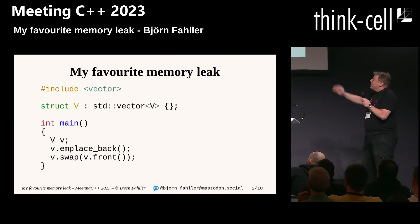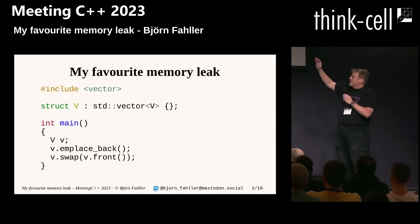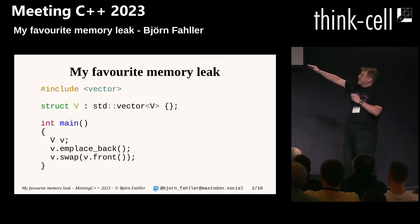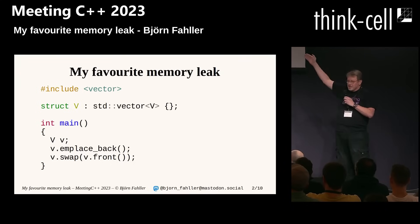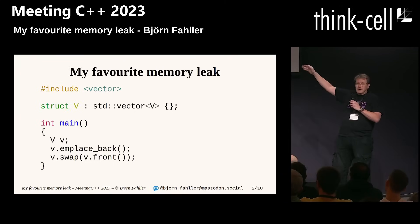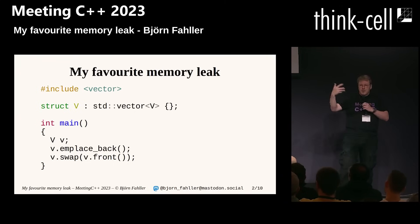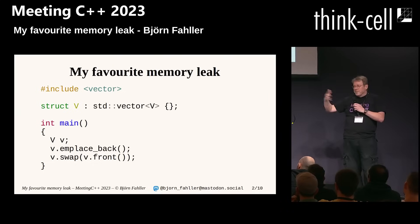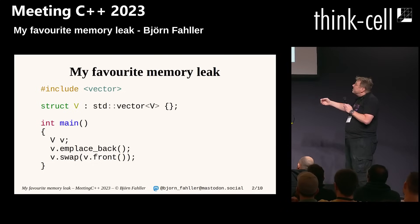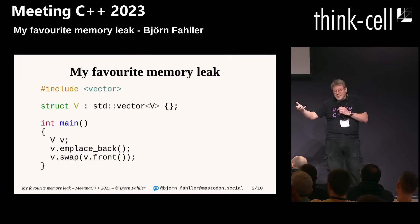The magic part of this is struct V. V is a vector of Vs. This is a really useful structure — V is a node in a tree with an arbitrary number of children. So V is a node itself, and V.begin to V.end is all the children of V.